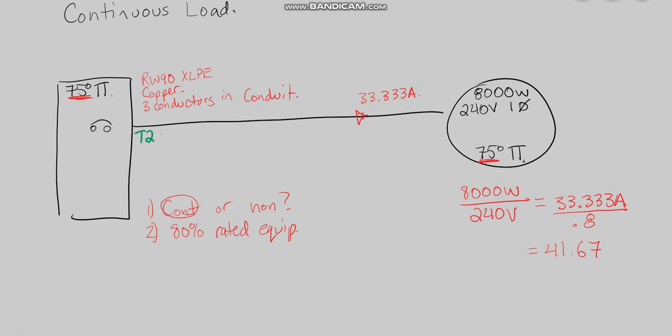Now that we have our 41.67 amps, we're going to go table two, 75 degree column, and we're going to size our conductor based off that 41.67 amps, which in this case should work out to a number eight AWG, which is good for 50 amps.